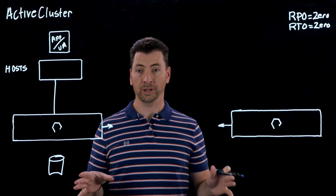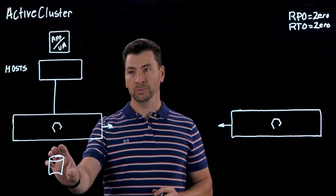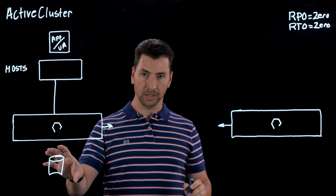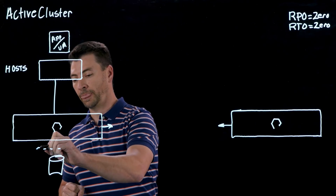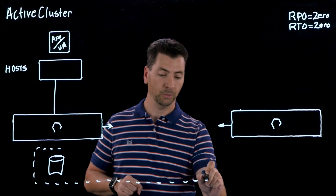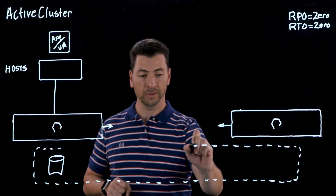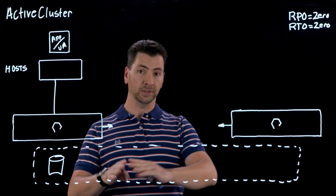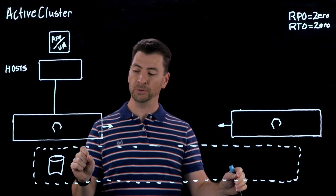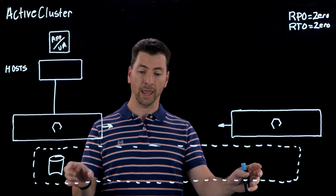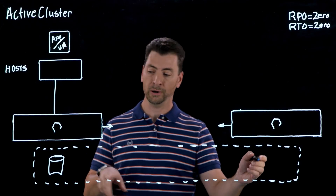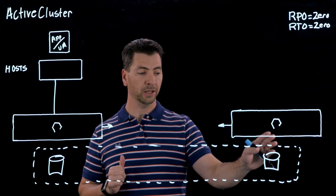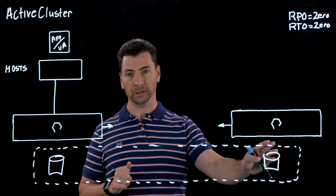One of the next steps for configuring Active Cluster is to take the volume or volumes that I want to be active-active across both arrays and put them into a management container that we call a pod. When we create this pod, we can perform an additional step referred to as stretching — this pod would be stretched across to the array at the other site. When we first perform this stretch, the Pure Storage arrays will use the asynchronous replication engine, which maintains compression and is dedupe-aware, to create a copy of this LUN on the other array. This LUN is created automatically — you don't have to provision each and every target LUN for the synchronous replication.